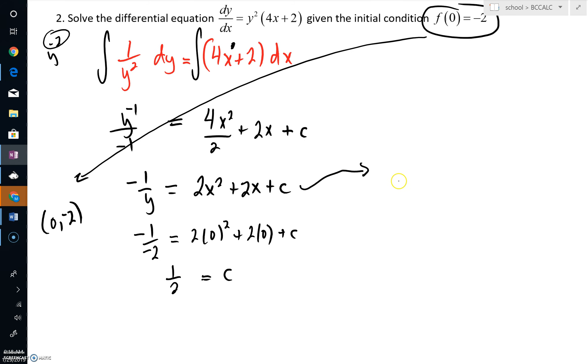Well, where is that going to take us? We're going to have negative 1 over y is equal to 2x squared plus 2x plus 1 half. Tell you what, I'm going to flip this. I'm going to take the reciprocal and say,